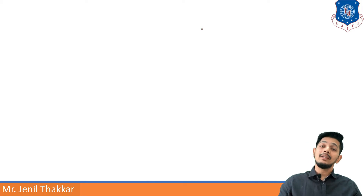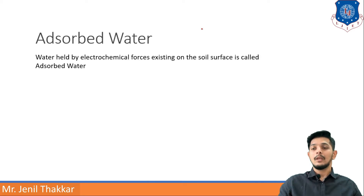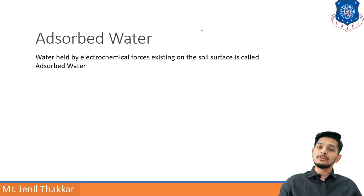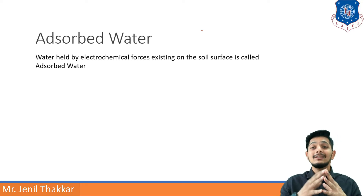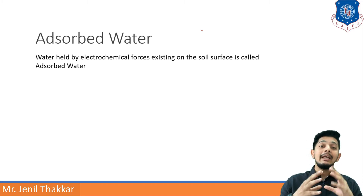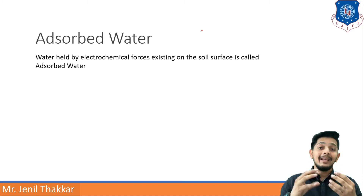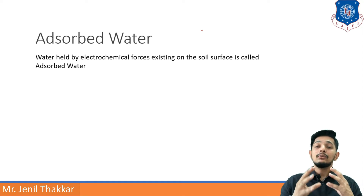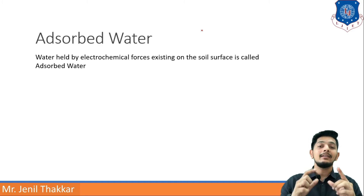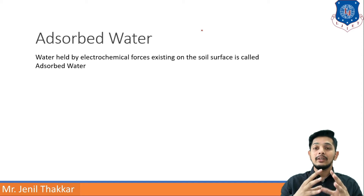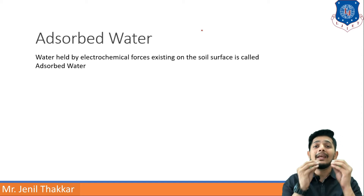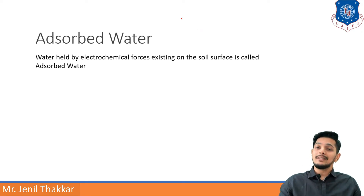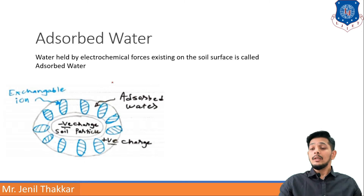Adsorbed water is water held by electrochemical forces existing on the soil surface. These electrochemical forces involve the movement of electrons, protons, and neutrons, resulting in forces of attraction and repulsion. Note that it is adsorbed — meaning it lies on the surface only — not absorbed inside the soil mass.